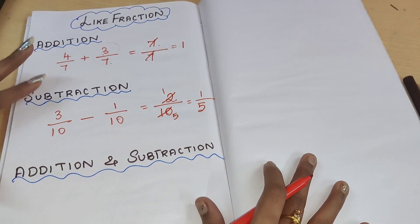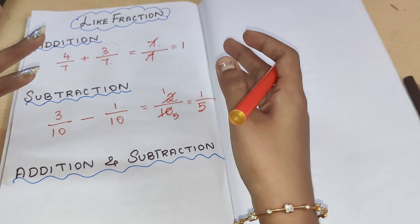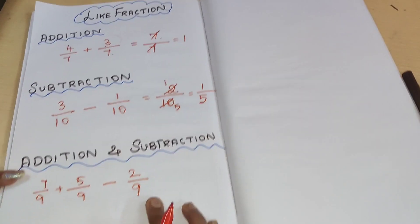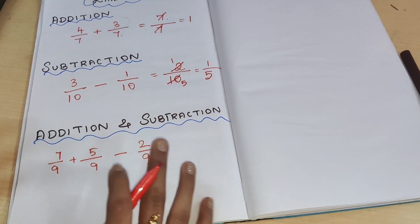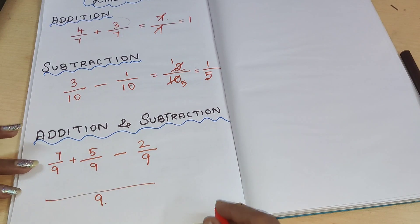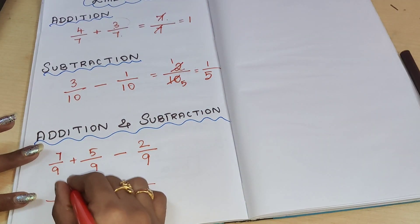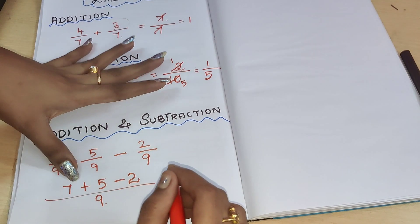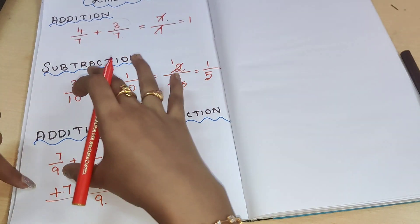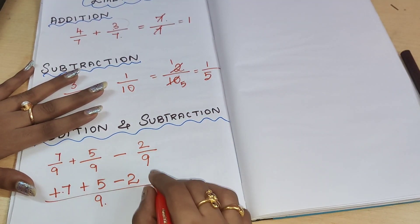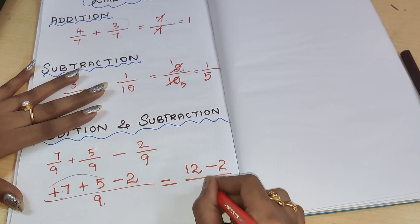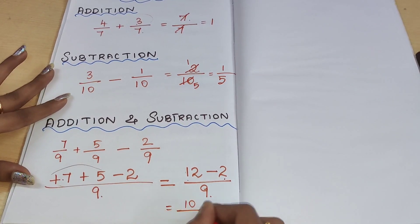Now we have completed addition and subtraction separately for like fractions. Let us combine both: 7 by 9 plus 5 by 9 minus 2 by 9. We have both addition and subtraction here. Since it is a like fraction, the common denominator is 9. Moving on to the numerator: 7 plus 5 minus 2. If no symbol is given, consider it as addition. So 7 plus 5 is 12, then 12 minus 2 is 10. The final answer is 10 by 9.